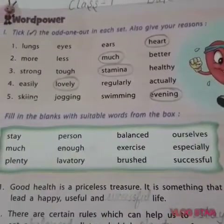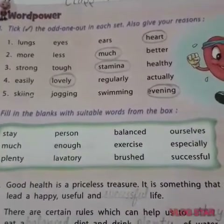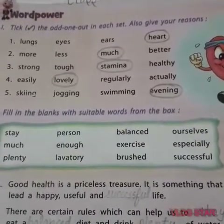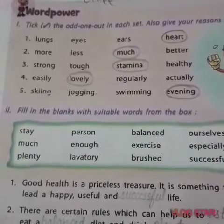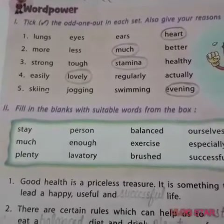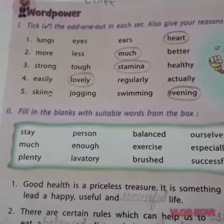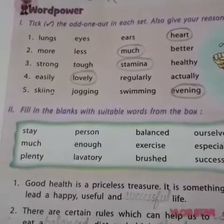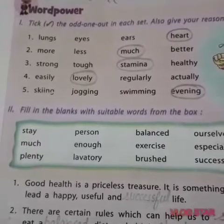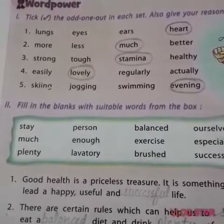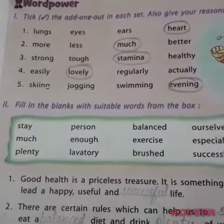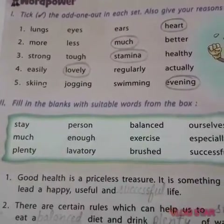The next one is: easily, lovely, regularly, actually. I have circled 'lovely'. Why? Because lovely is an adjective and the rest of the words — easily, regularly, actually — are adverbs.